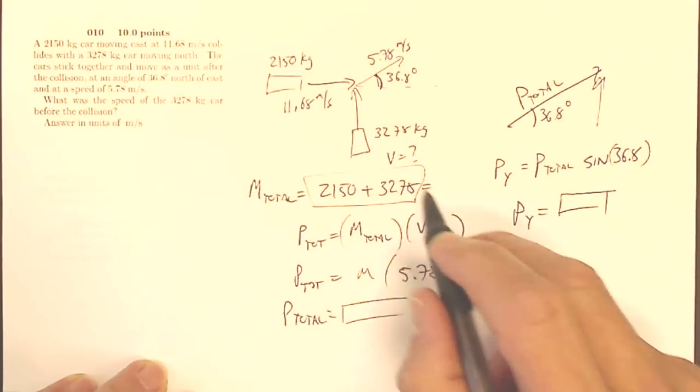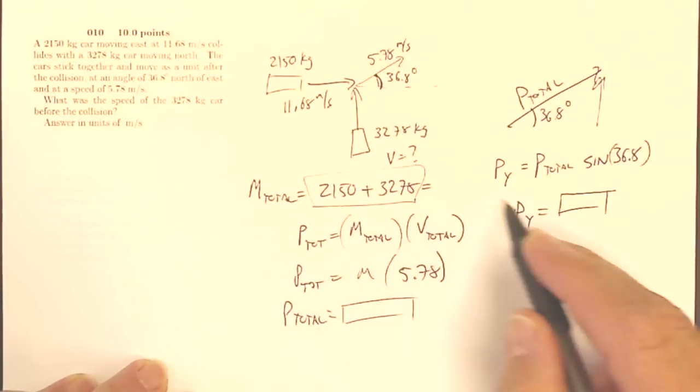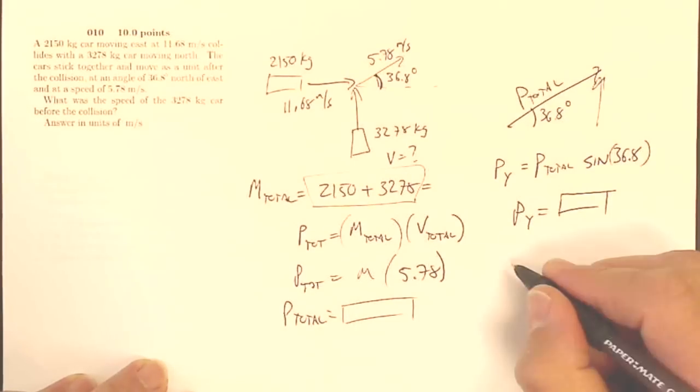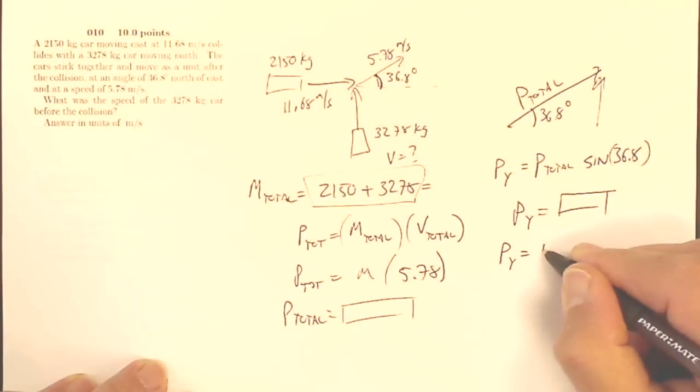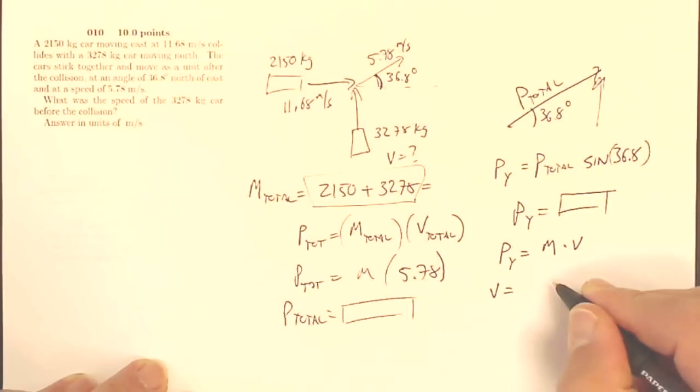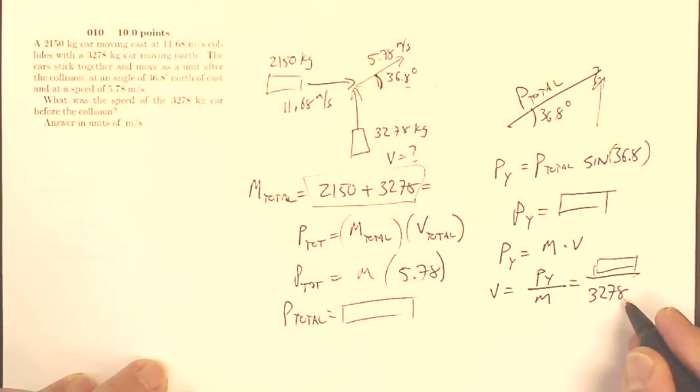Where did that momentum come from? It was this mass moving at some velocity. My momentum in the Y direction is going to be the mass times the velocity, and the mass is 3278 for me. So my velocity is going to be my momentum in the Y direction divided by the mass. It's going to be whatever I figured out right here divided by my mass of 3278 because that was the car going north, and that will give me the speed that that car was going before the collision.